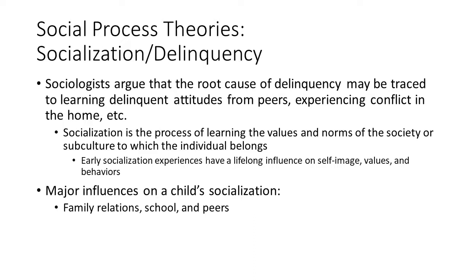Sociologists interpret the association between socialization and delinquency differently, and there are three different views. There is learning theory, where criminal and delinquent behavior is learned. There is control theory, where such behavior is the result of a lack of control or restraint. And there is labeling theory, where delinquent behavior results from one being labeled as such — being called a bad person, a delinquent, a criminal — and becoming stigmatized.